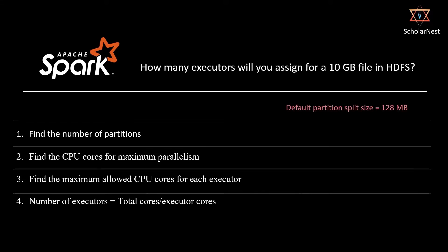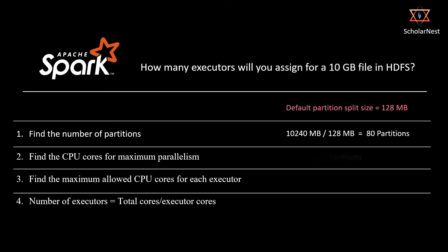The default partition size for Spark is 128 MB. Our data volume is 10 GB, which equals 10,240 MB. Dividing 10,240 MB by the default partition size of 128 MB gives us 80 partitions. So we have 80 partitions and need 80 cores for maximum parallelism.